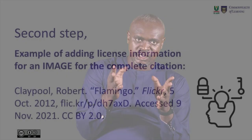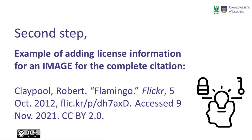Here is an example of adding license information for an image for the complete citation. As you can see on your screen, this is what it should look like: you have the author's name, the publisher's name, the name of the image, the link, the date, and other information — and most importantly, you have the license of that particular image.